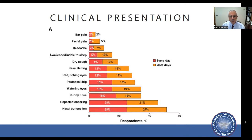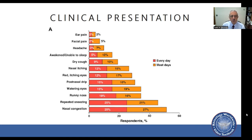In the Pediatric Allergies in America survey, the most frequently mentioned complaint was nasal congestion, followed by repeated sneezing, runny nose, watery eyes, post-nasal drip, red itchy eyes, nasal itching, dry cough, inability to sleep, headache, facial pain, and ear pain being the least. When both children and parents were asked what bothers them most, nasal congestion wins for about a quarter of respondents, followed by headache, runny nose, repeated sneezing, red itchy eyes, dry cough, and post-nasal drip.